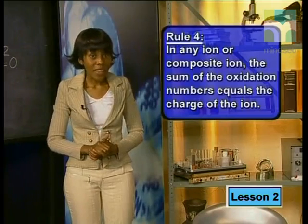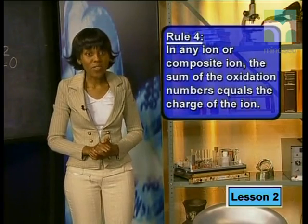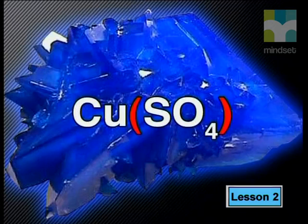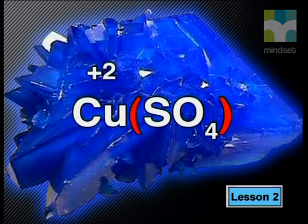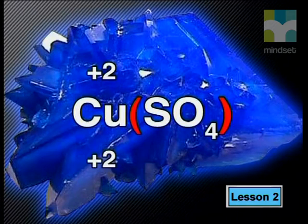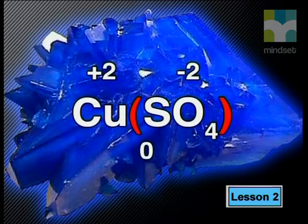Rule four gives us the oxidation numbers for ions and composite ions. A composite ion is a group of atoms that carry an overall charge — these can also be called radicals or polyatomic ions. Rule four states: in any ion or composite ion, the sum of the oxidation numbers equals the charge of the ion. For example, in copper-2-sulfate, we know from the name that the copper ions have a valency of plus two, so the oxidation number of copper is also plus two. The sulfate ion is a composite ion with an overall charge of minus two, so the total oxidation number of the sulfate ion is minus two. The overall oxidation numbers add up to zero, which is correct according to rule two.